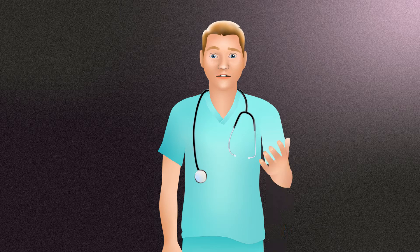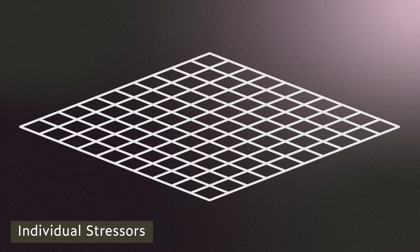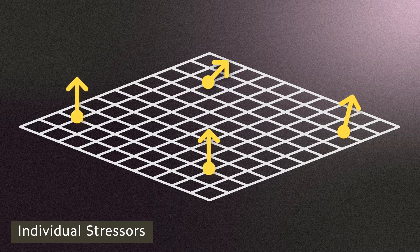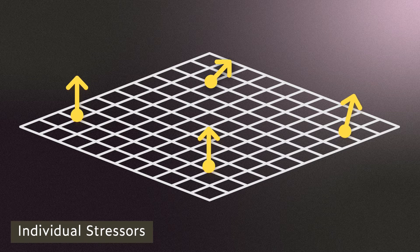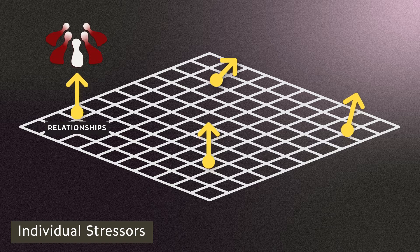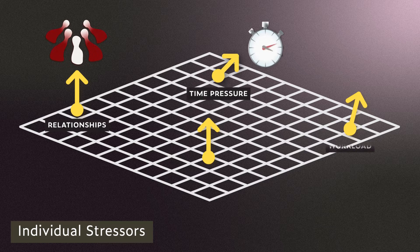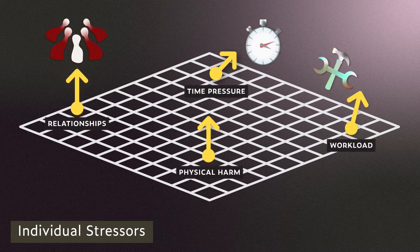Stressors at the individual and group level are far less concrete. At the individual level, stressors are related to the role you play and the tasks you must accomplish. This includes ambiguity about your position within an organization and conflict with others, as well as things like time pressure, workload, and the threat of physical harm.